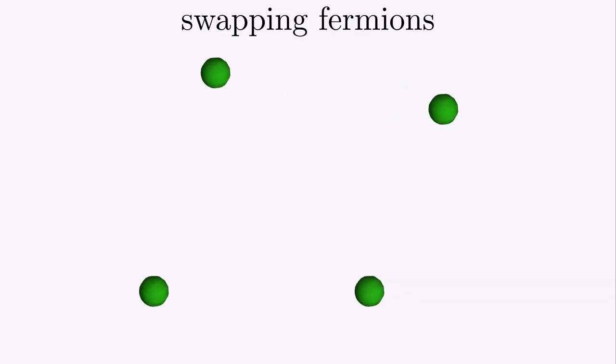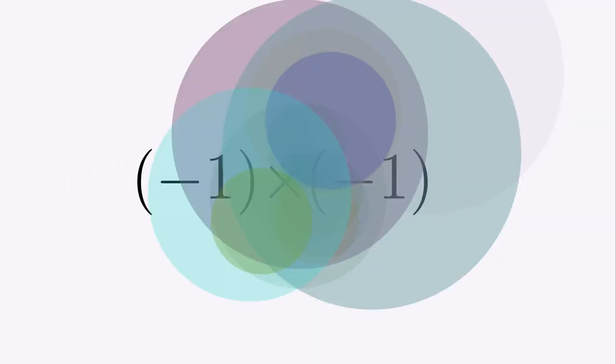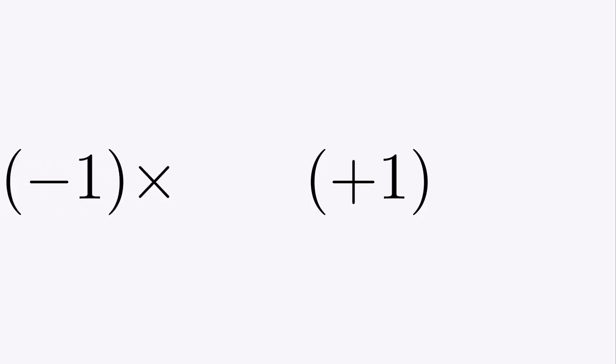There's another kind of particle called a fermion. Here I made some green balls to represent fermions. When we swap two identical fermions, the quantum mathematics is a bit more tricky. First we need to remember how to multiply with negative numbers. The rule is a negative times a negative is a positive. Just like saying a bad thing done badly is a good thing. The other rule is a negative times a positive is a negative. Just like saying a bad thing done well is still a bad thing. So every time we hit this with a negative, the sign flips. The good thing becomes bad. And then the bad thing becomes good again. And it just keeps going on like that.